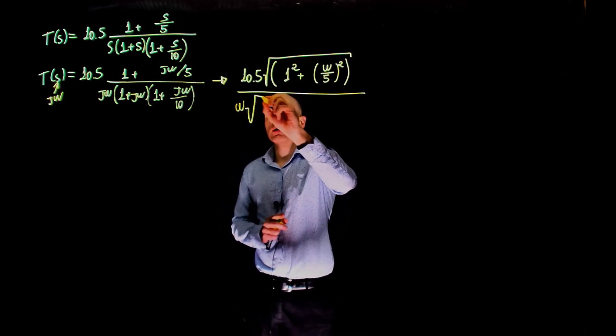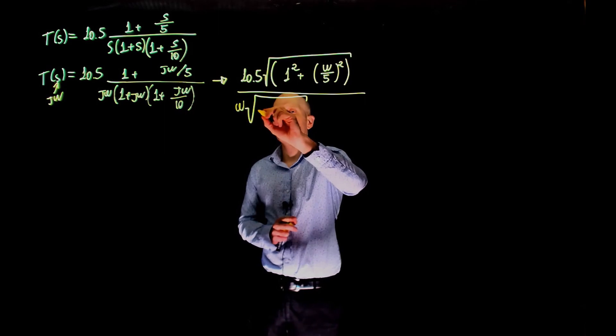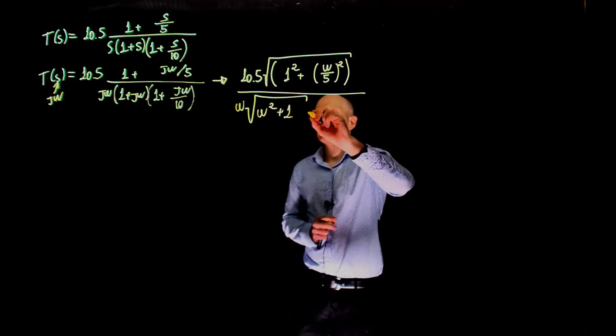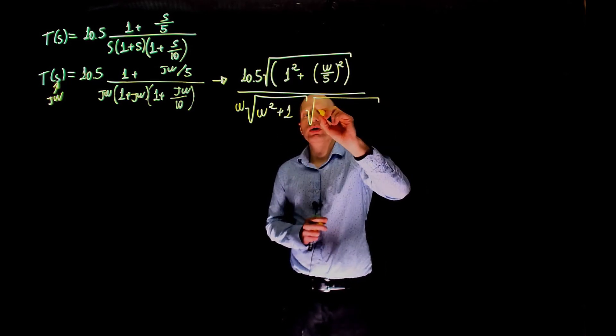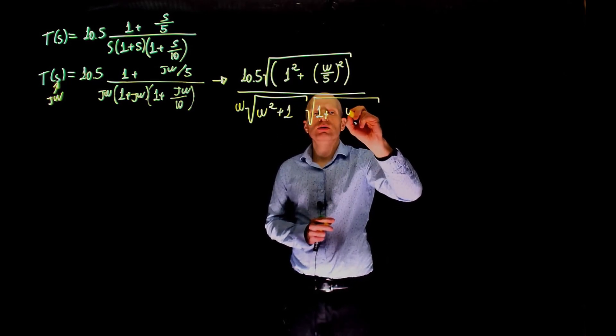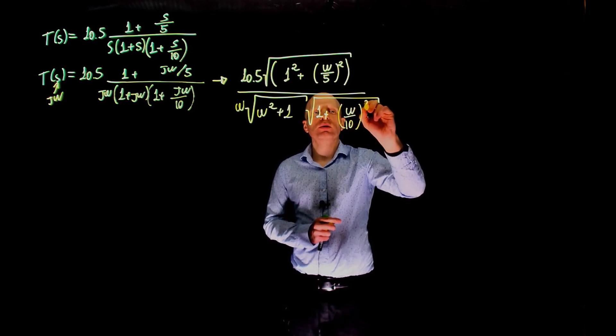The magnitude of 1 plus j omega is the square root of omega squared plus 1. And finally, we have the square root of 1 plus omega over 10 squared.